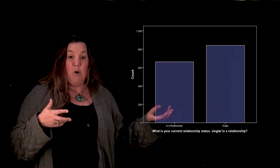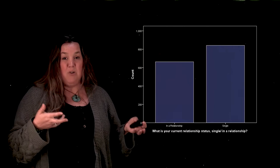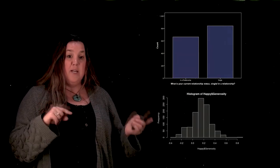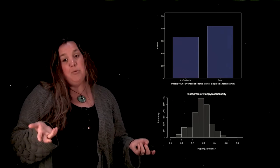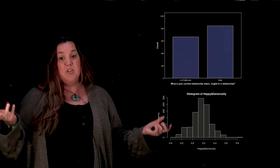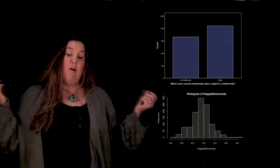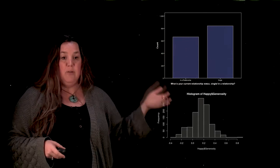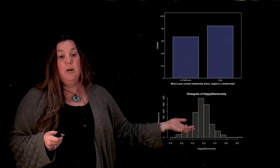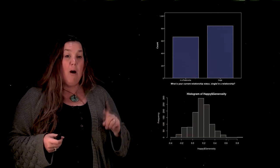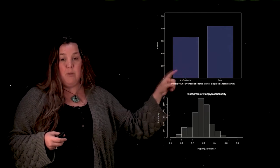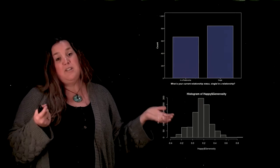People think that because a bar graph has bars and a histogram has bars, they're the same thing — but they're not. Here is a bar graph and a histogram side by side. A couple of things people usually say when I ask what's the difference: they'll say in a histogram the bars are touching and in a bar graph they're not. That's true — here the bars are not touching, and here the bars are touching. But why? Why are the bars touching in the histogram and not in the bar graph? Is there anything else that you notice that's different?